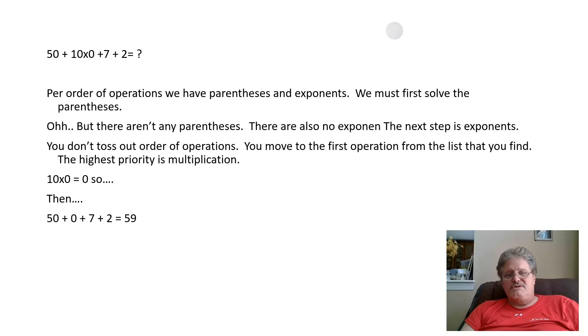If you take 50 plus 10 times 0 plus 7 plus 2, per order of operations we would look for parentheses. A lot of people get hung up here and think, well, I was taught that if you don't have parentheses you just solve left to right.